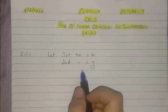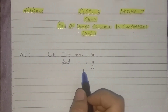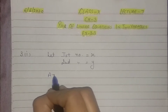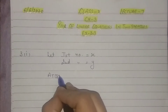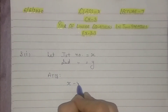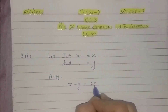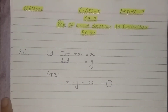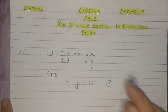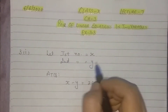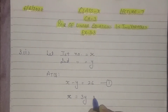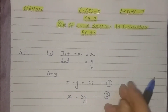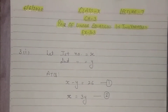Let the first number be x and the second number be y. According to the question, the first condition is that one number is three times the other, which means x is equal to 3y. This is equation number 2. The second condition gives us x minus y is equal to 26, which is equation number 1. Now we have to solve these two equations using the substitution method.